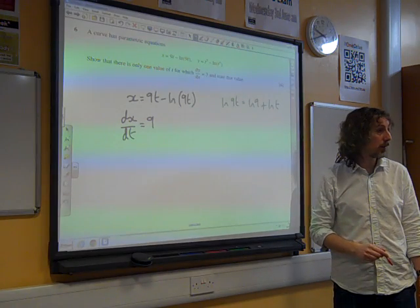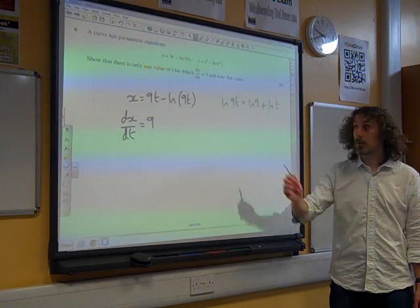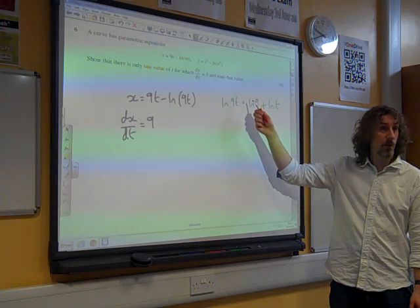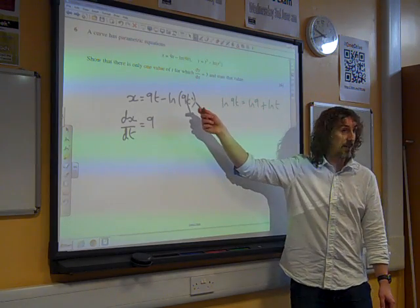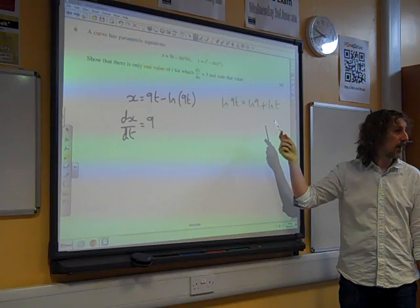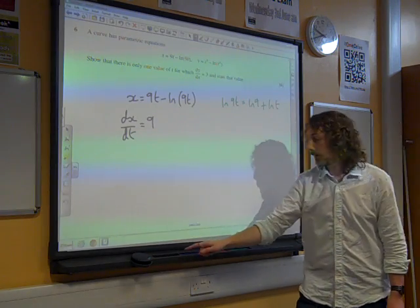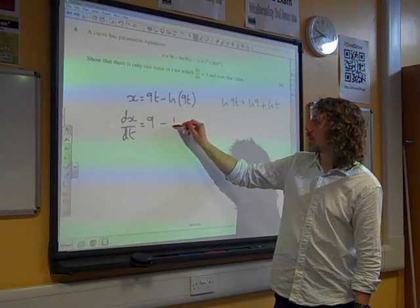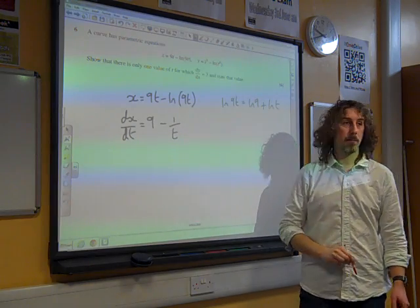Using the laws of logarithms that we know about, if you differentiate a number, you get 0. So differentiating ln(9t) is the same as differentiating ln(t). It just gives us 1 over t. So that's minus 1 over t.